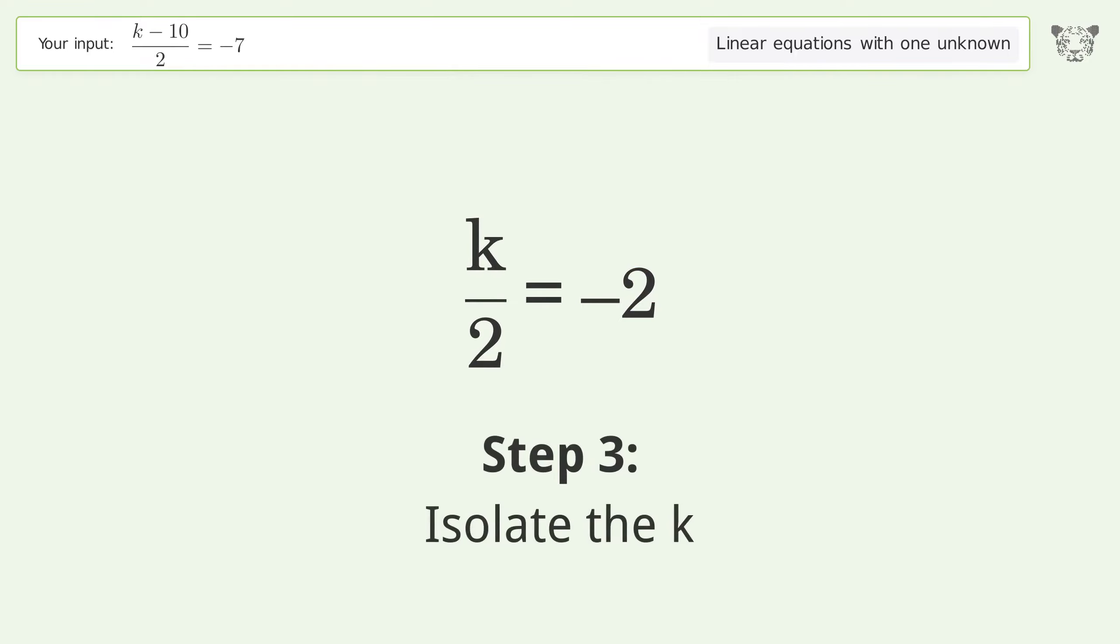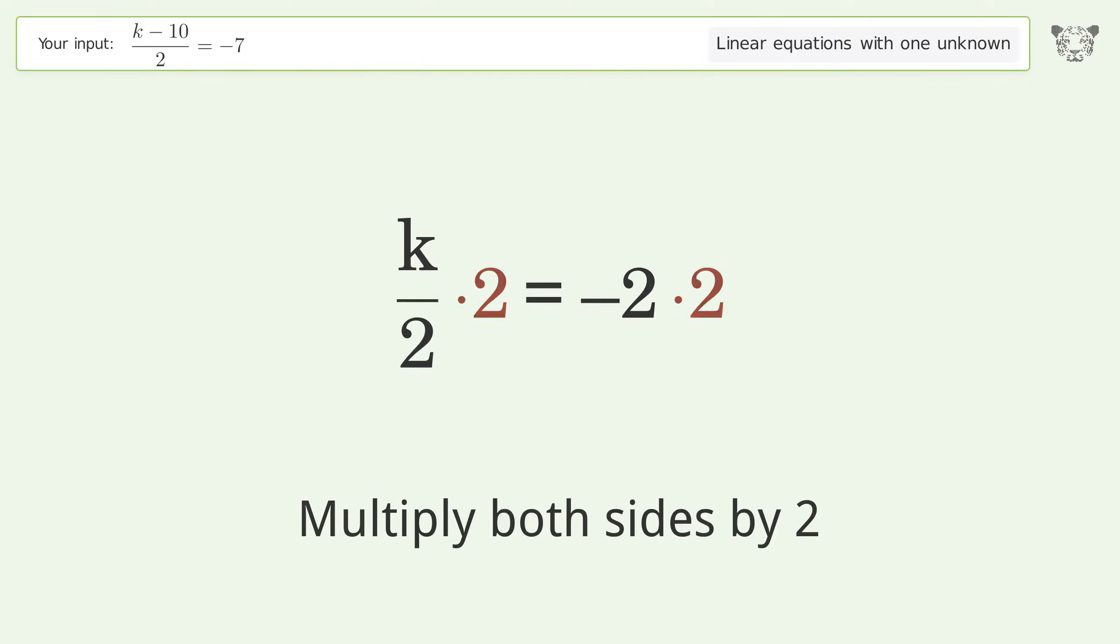Isolate the k. Multiply both sides by 2. Group like terms.